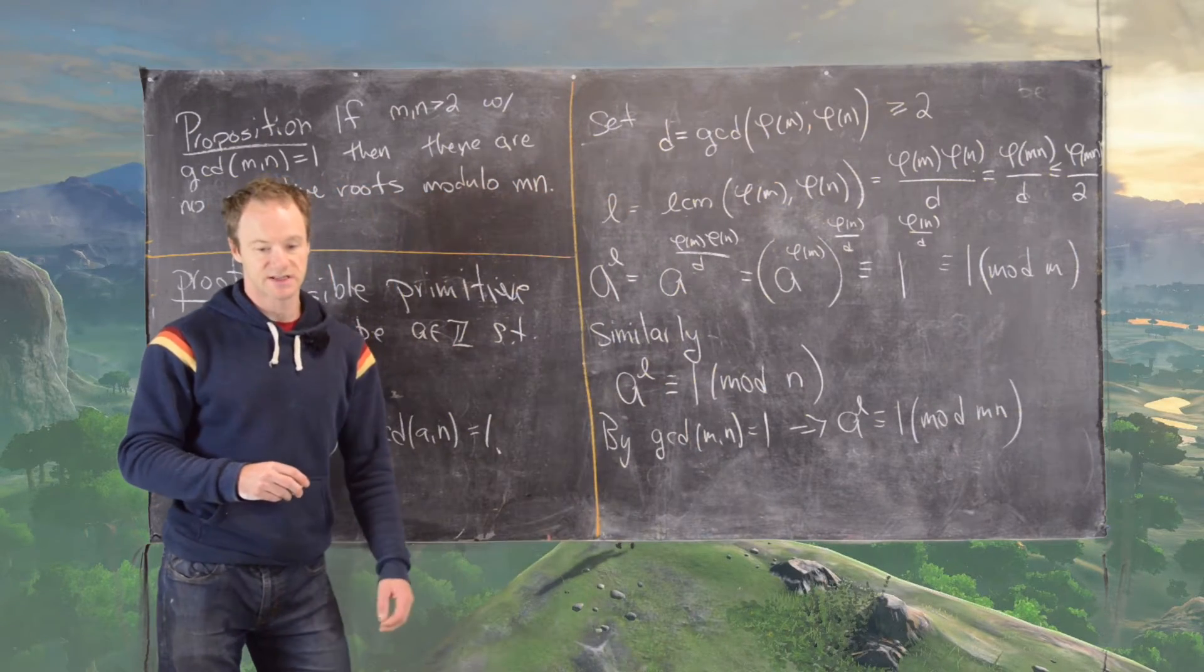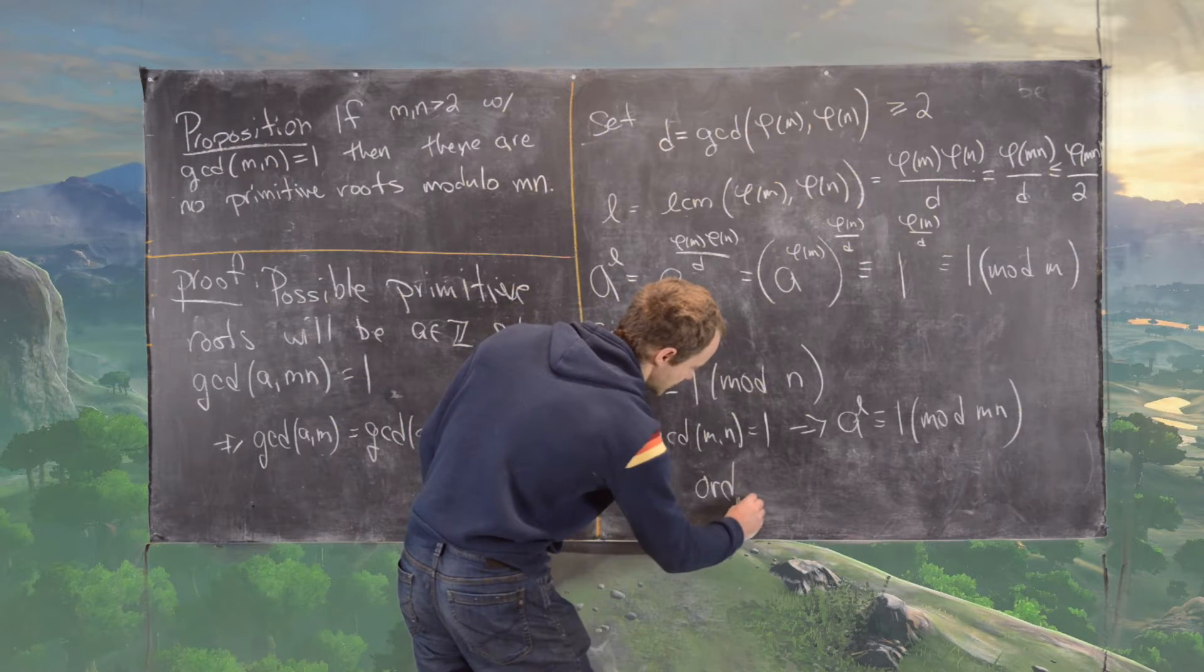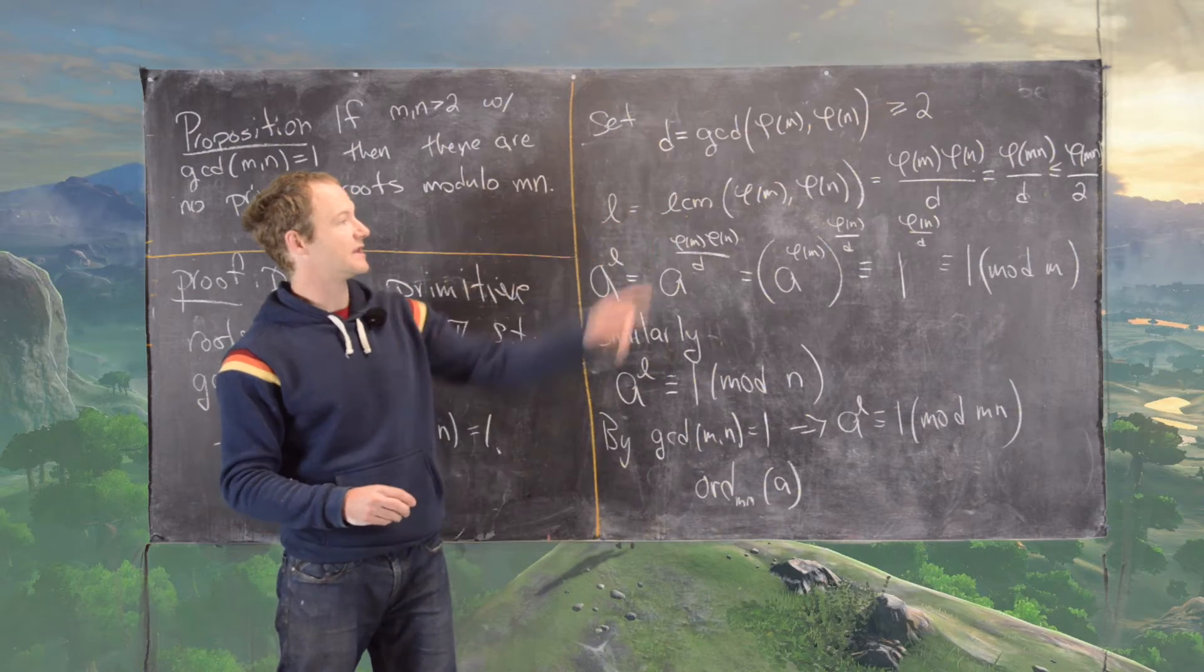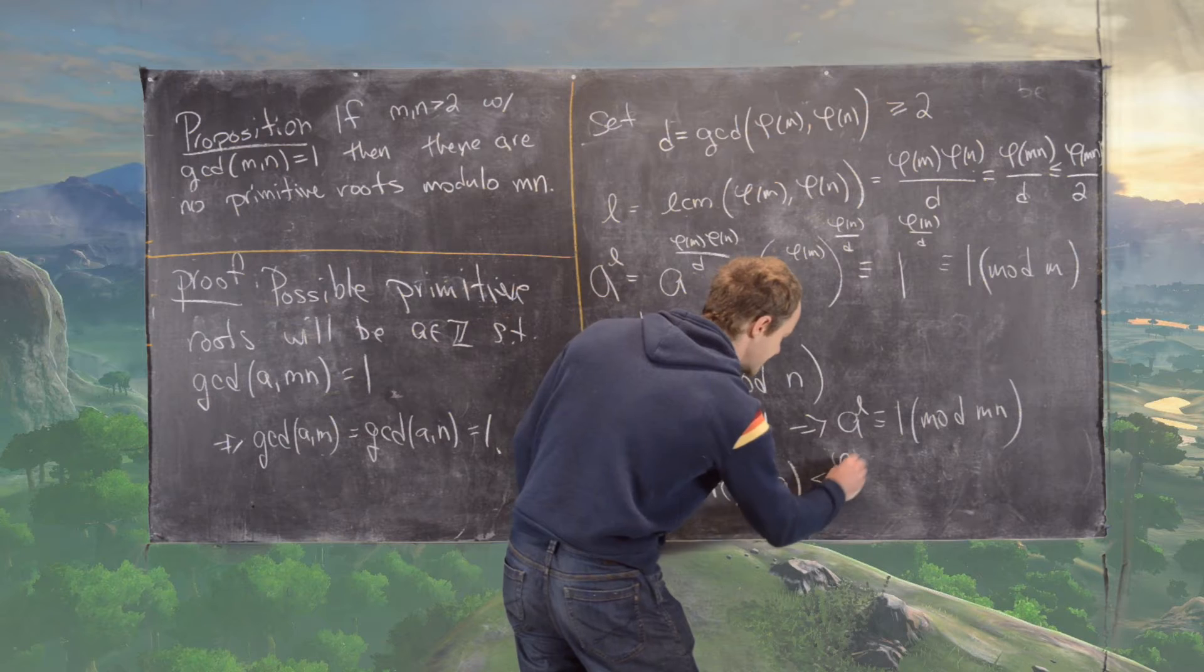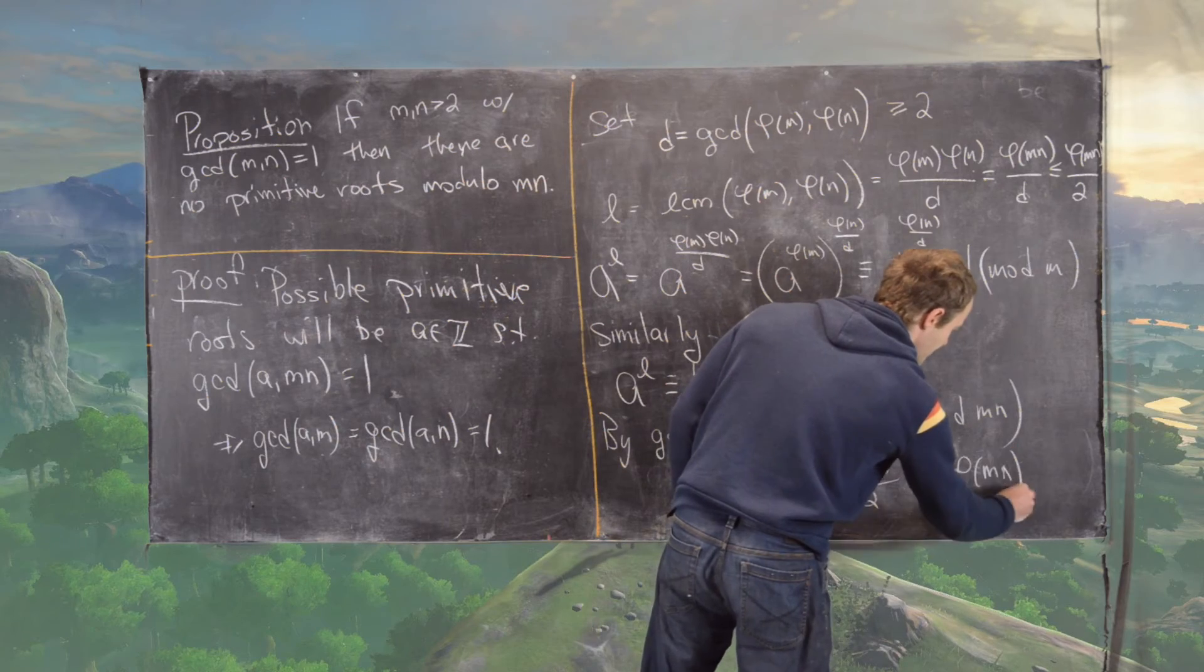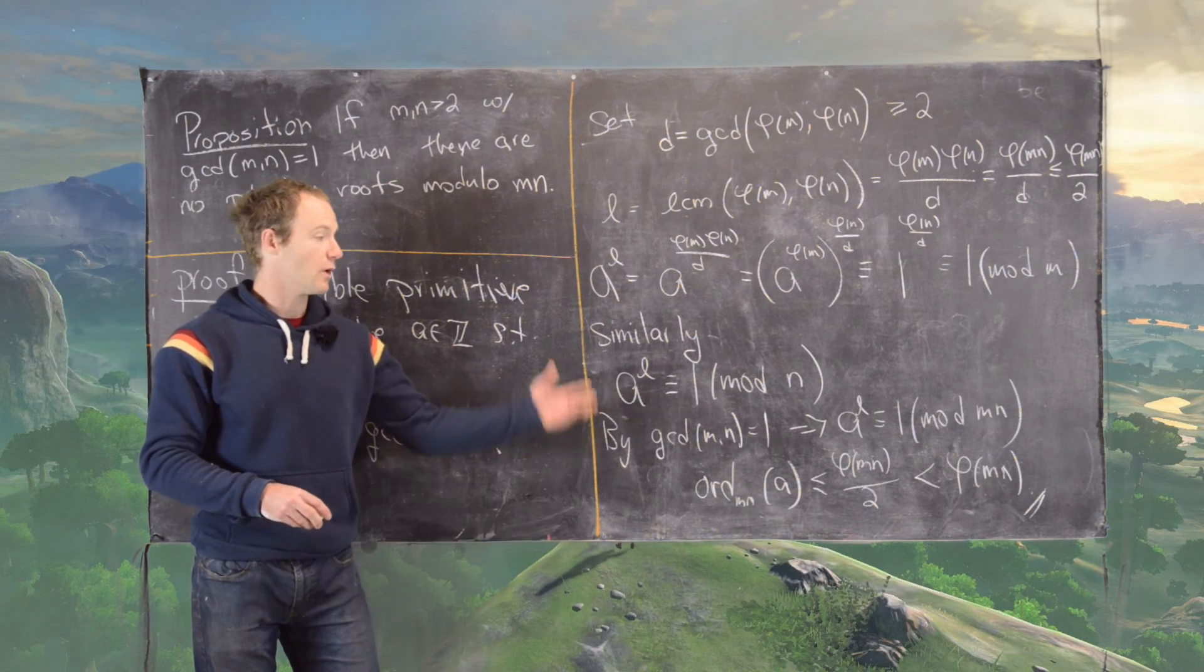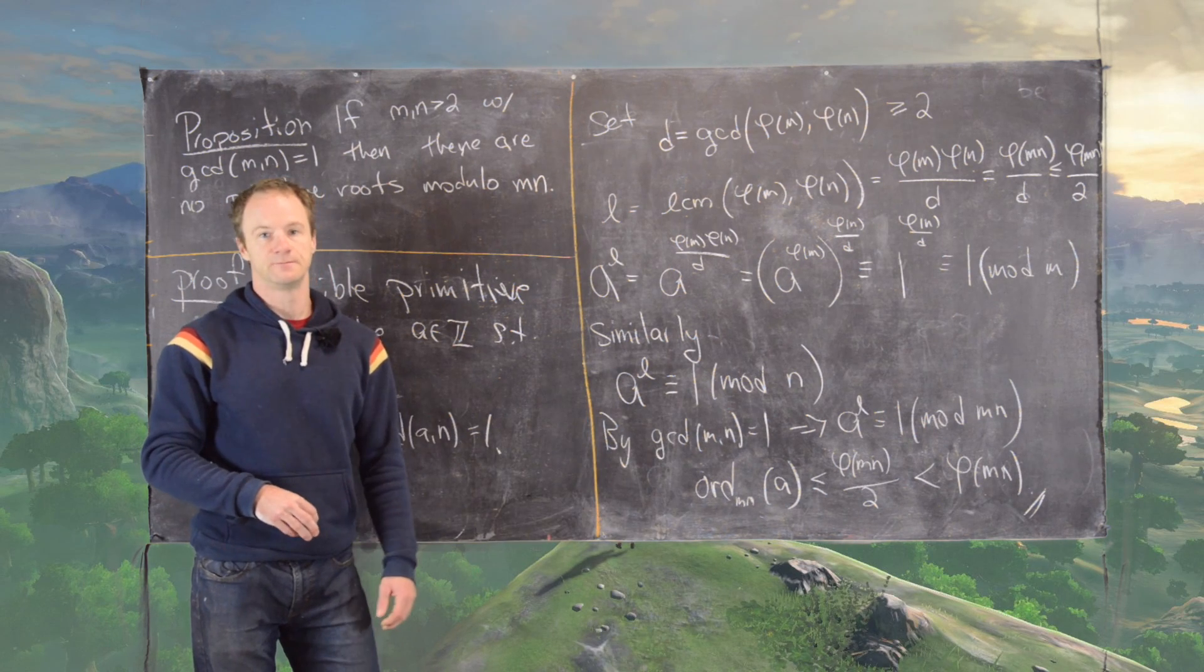But what that tells us is that the order modulo MN of A is less than or equal to L for one thing. But notice that L itself is less than or equal to phi of MN over 2. So this is less than or equal to phi of MN over 2, which is strictly less than phi of MN. And recall that this phi of MN number is the number that we need to acquire in order to have a primitive root. So what we've shown is that there's no possibility of a primitive root modulo MN. And that's the end of this proof.